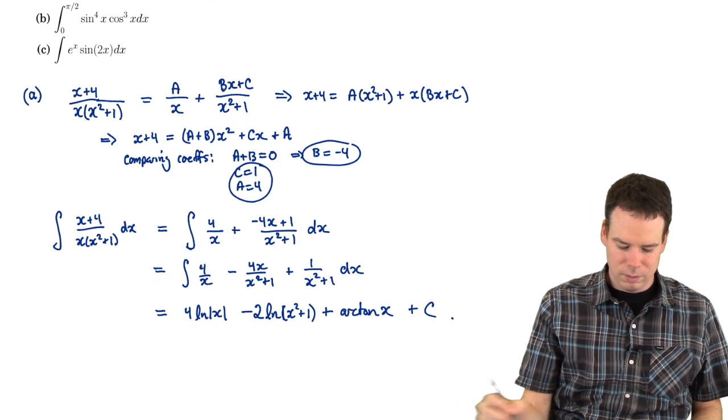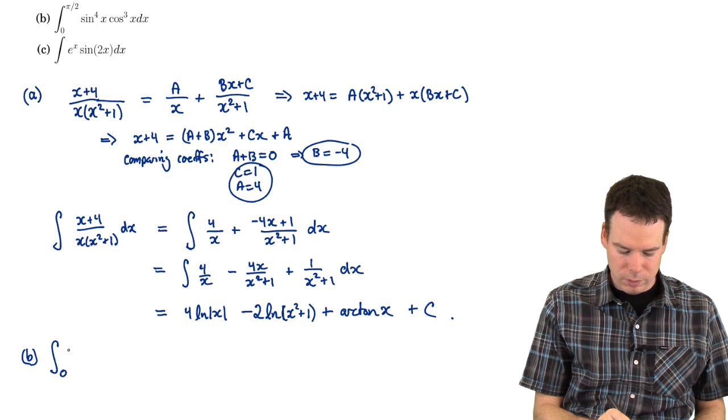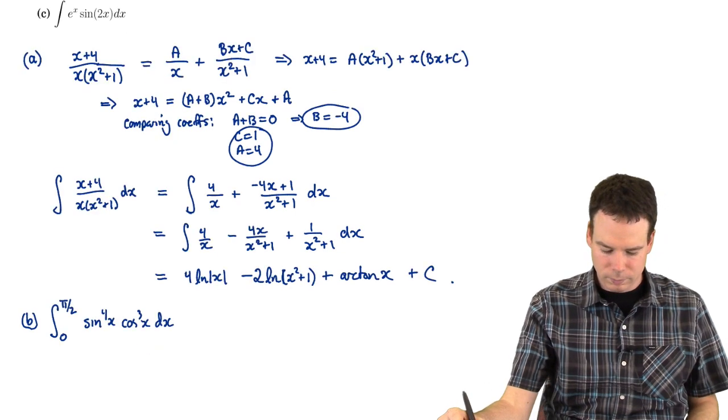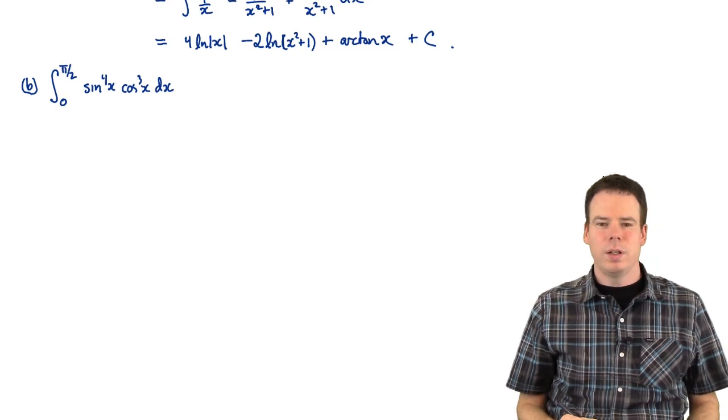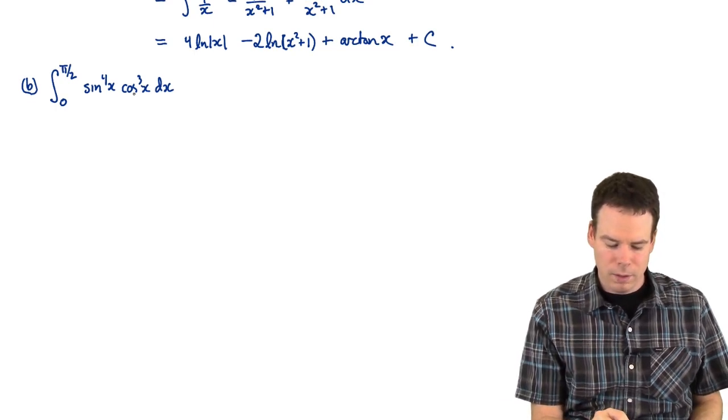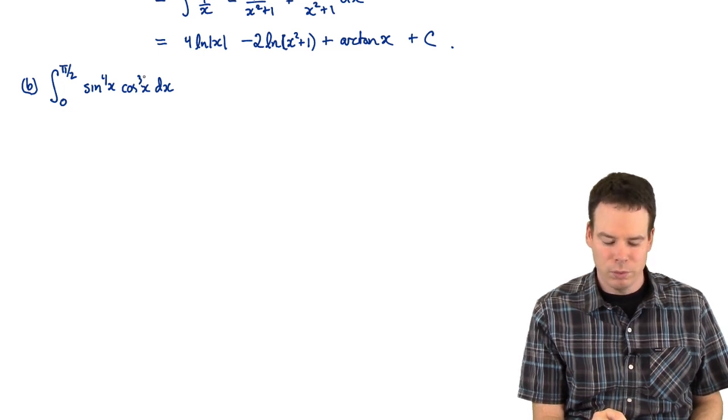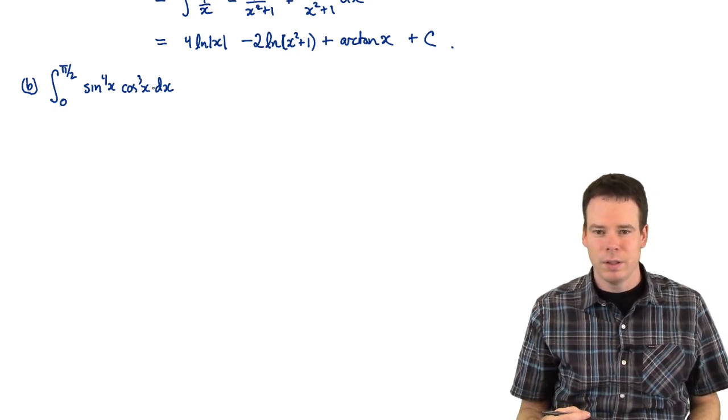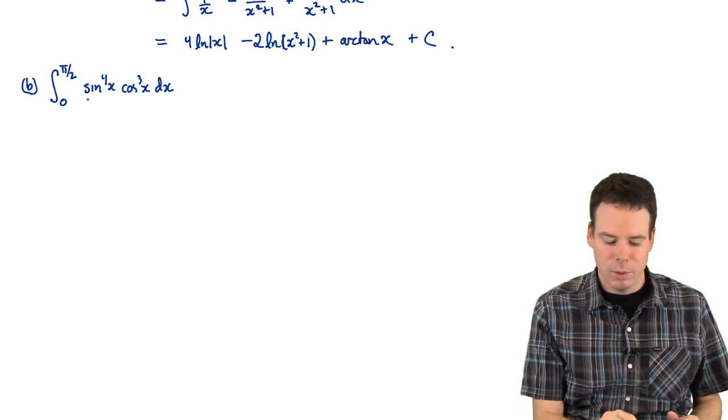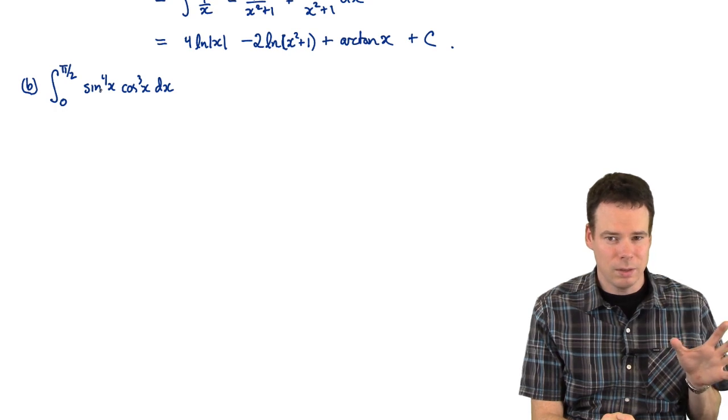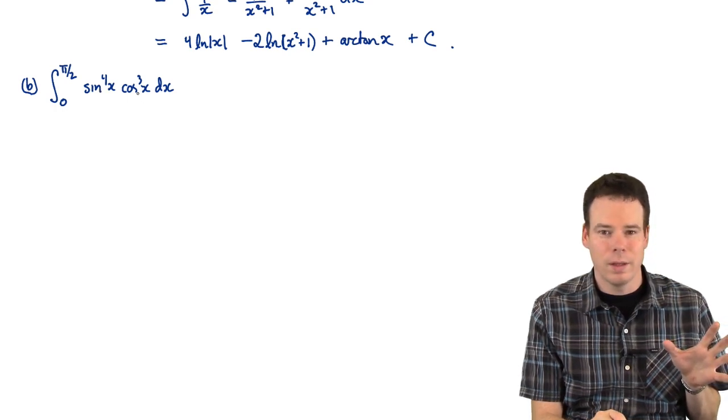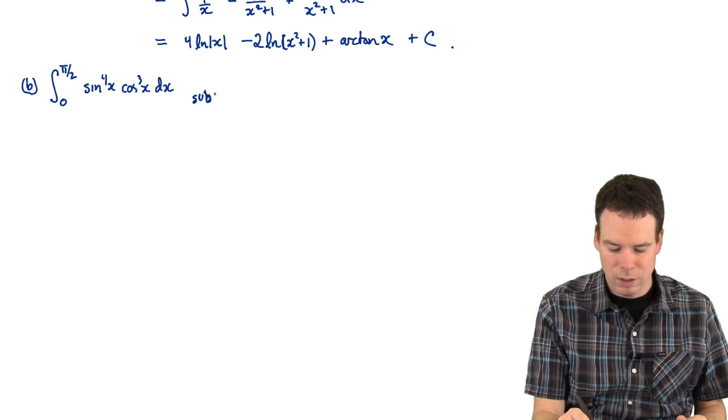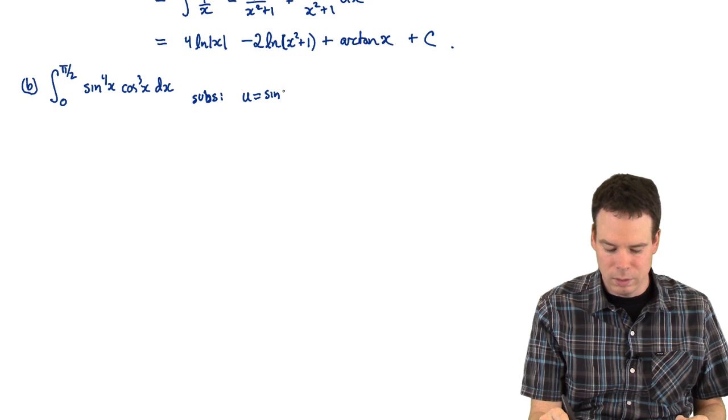Let's have a look at the next one. Part B. Integral from 0 to pi by 2 of sin to the 4th x cos cubed x dx. So what do we do here? Well, I've got cosine to an odd power. If I borrow one of those cosines, split it away from the other ones, then I'd have a cos squared with another cosine left over. That cos squared I could rewrite in terms of sine. And then I've got a bunch of other stuff in terms of sine. So if I substitute for the sine function, the derivative would be the cosine function, that one that I split off from the rest. So I could use that in a substitution. So it looks like this is going to be able to be solved using a substitution. U equals sine of x.